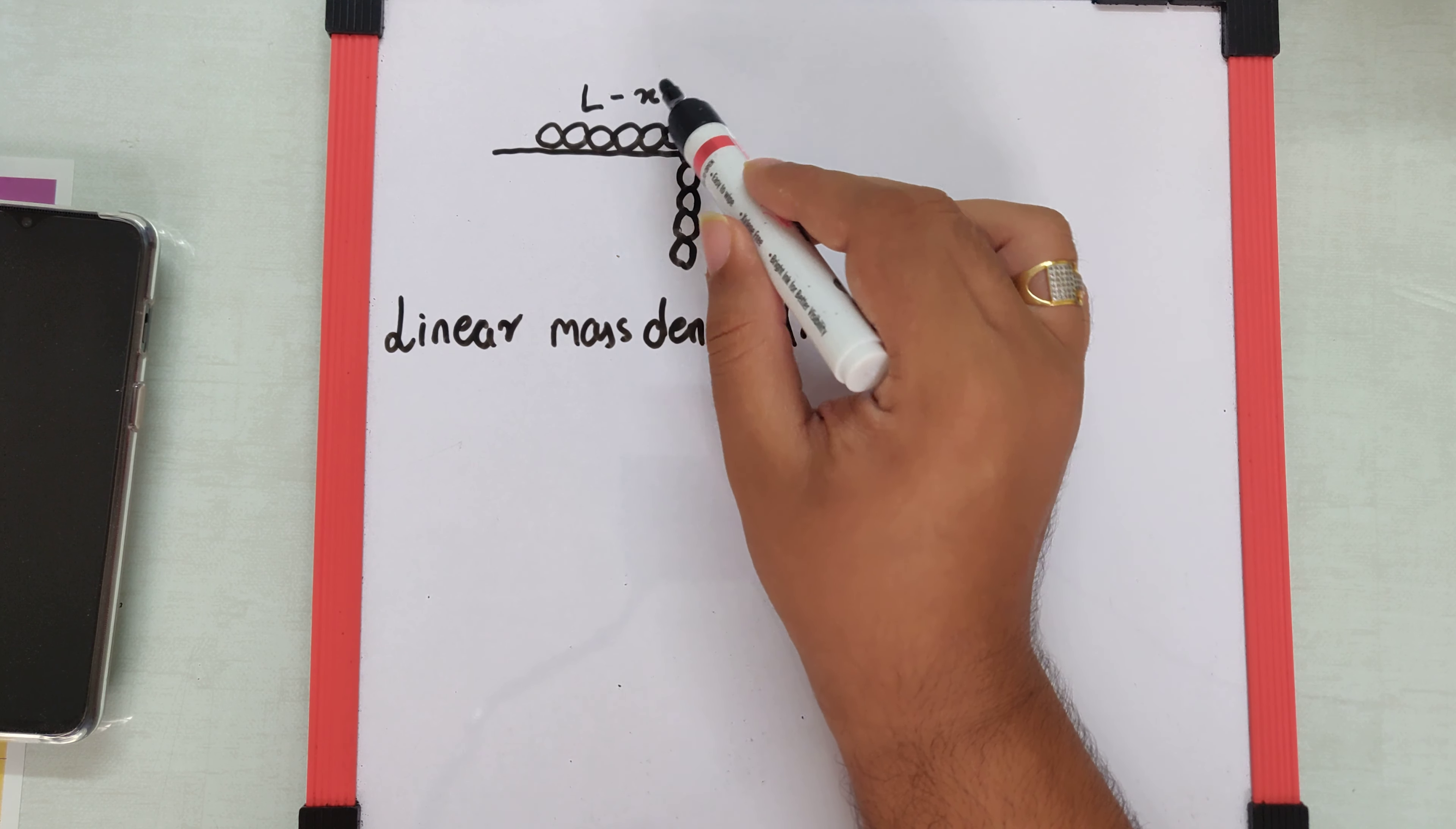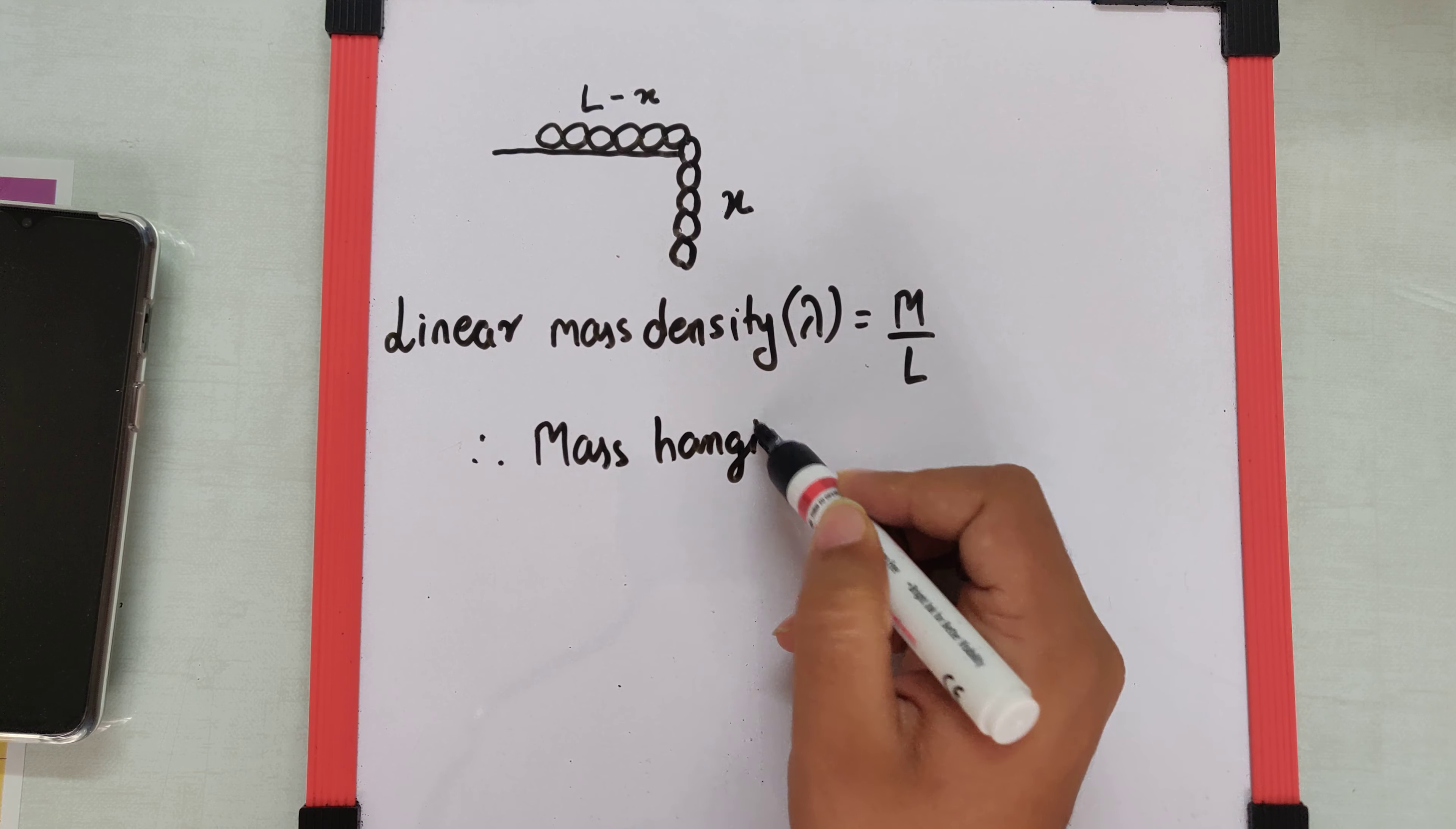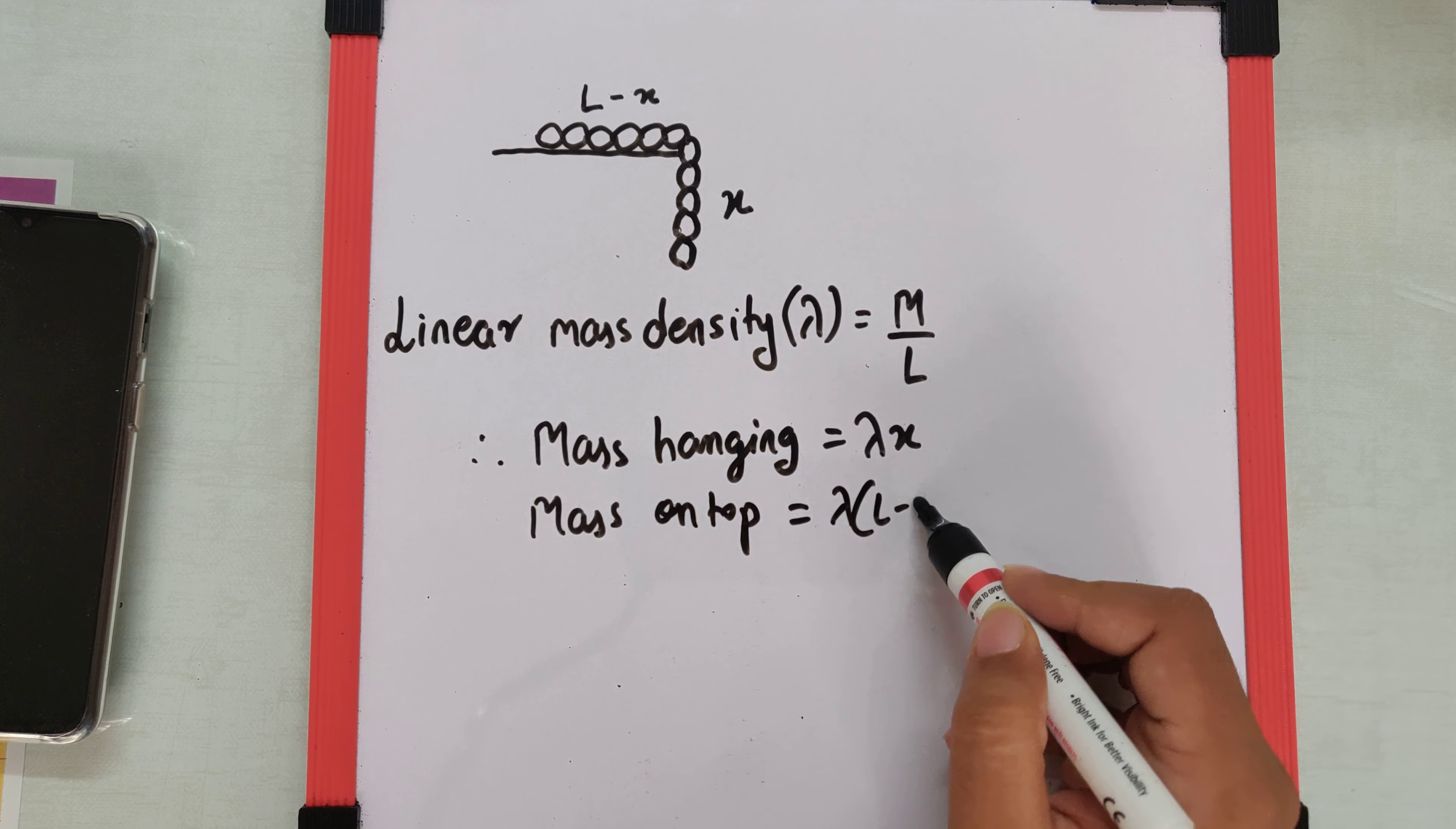And the mass which is on the top is L minus x times the linear density. So the mass hanging is going to be λx and the mass on top of the table is λ(L minus x).